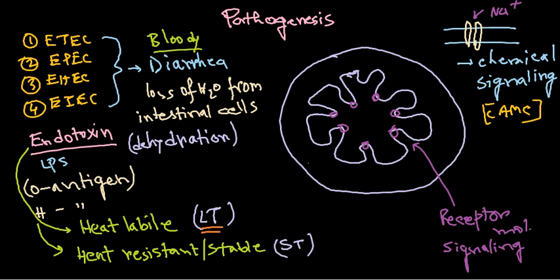The heat labile toxin, or LT toxin, moves toward the intestinal cells and attaches to these receptors. As a result of LT toxin binding to the receptor, it triggers a secondary response inside the cell. Normally, a natural signaling molecule binds the receptor, cyclic AMP rises, sodium and chloride are pumped out into the gut, and then the signal stops as the molecule cleaves away and leaves.